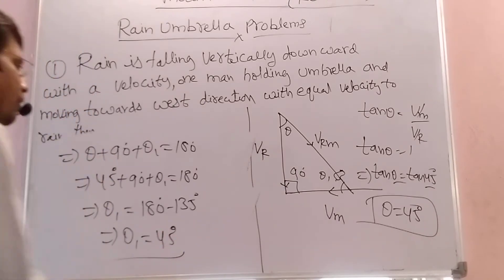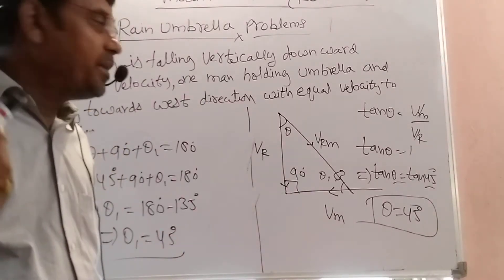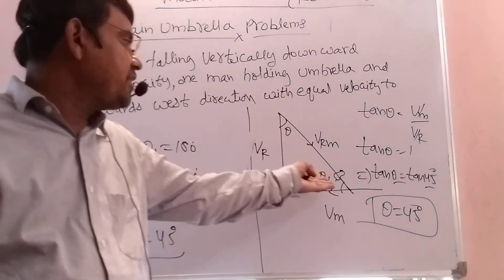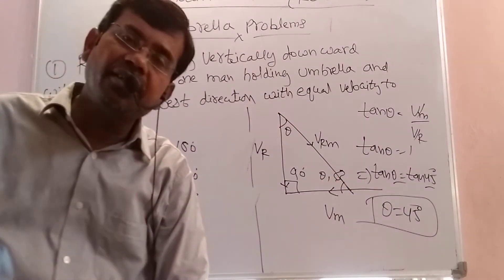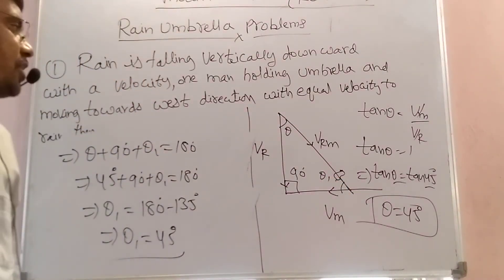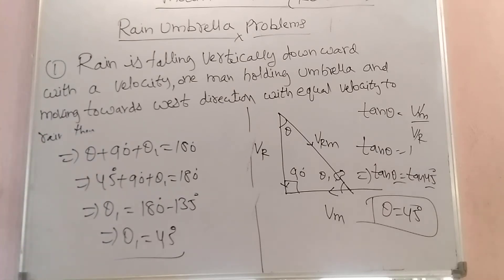So the result: the rain appears to make an angle of 45 degrees with the vertical, and similarly 45 degrees with the horizontal as well. That is the concept for solving rain-umbrella problems.